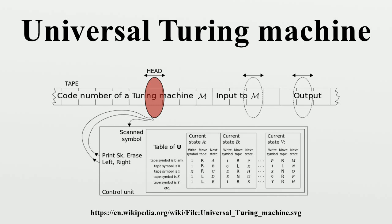Indeed, Minsky confirms this, stating that the first formulation of Turing machine theory in computer-like models appears in Wang. Minsky goes on to demonstrate Turing equivalence of a counter-machine. With respect to the reduction of computers to simple Turing-equivalent models, Minsky's designation of Wang as having made the first formulation is open to debate. While both Minsky's paper of 1961 and Wang's paper of 1957 are cited by Shepherdson and Sturgis, they also cite and summarize in some detail the work of European mathematicians Kaphengst, Ershov, and Peter.